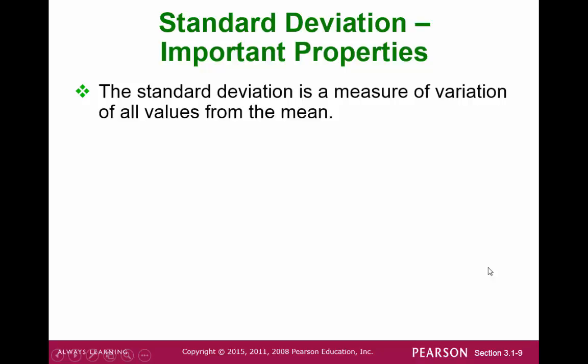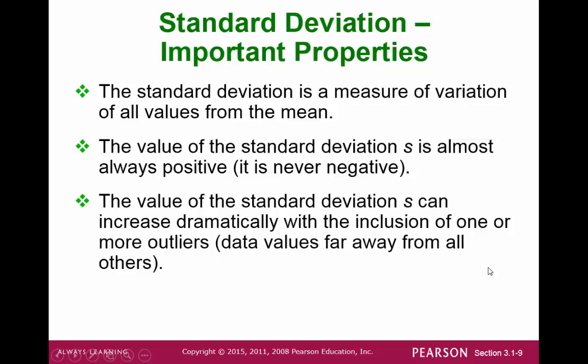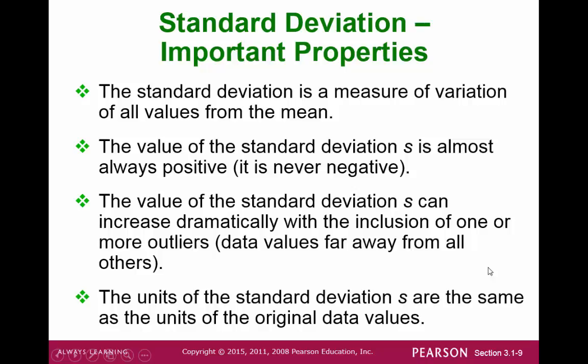Let's examine some important properties of the standard deviation. First, it takes into account all of the values — a change in any value in the dataset will change the standard deviation. Next, because we are looking at the distances from the mean, we would never get a negative value. This is also confirmed mathematically when we take the square root. The standard deviation is zero only when every value in the dataset is equal. Just like the mean, outliers drastically change the standard deviation. And the units are the same as the original data — if the data was in inches, the standard deviation will also be in inches.